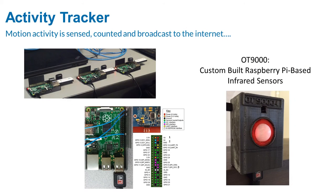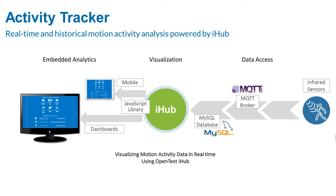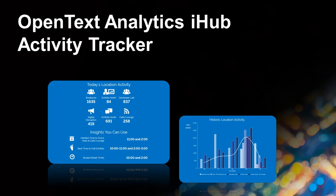Activity Tracker sensors were hand-built by OpenText Analytics engineers using infrared diodes, circuit boards, open-source software, and a 3D printer. Placed at various locations around Enterprise World, the sensors transmit activity events to the OpenText Analytics iHub, where the data is turned into meaningful visualizations and insights, and delivered via a tablet-based HTML application.